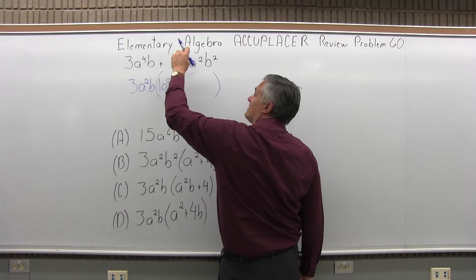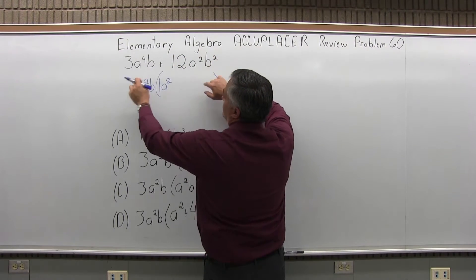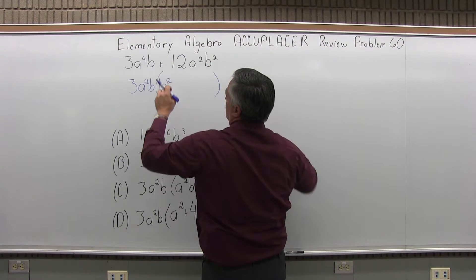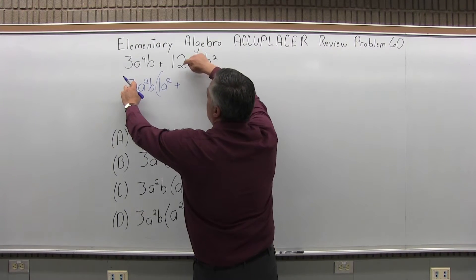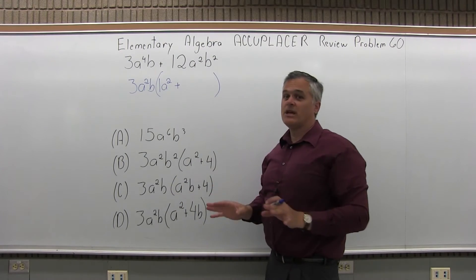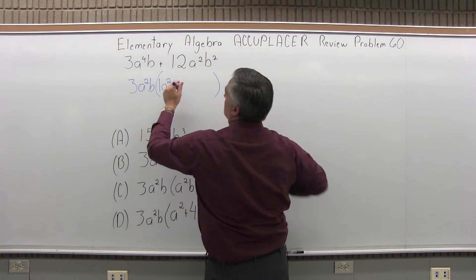So now move on to the second piece, 12A to the second B to the second. I have to multiply times something with the number in front to get back the 12A to the second B to the second. First of all, don't forget the sign, it's going to be a plus. Three times what will give me back a twelve? Again, at this point I'm not even concerned with A and B, I'm just looking at the numbers. Three times what will give me a twelve? Three times four. Now, numbers are done.